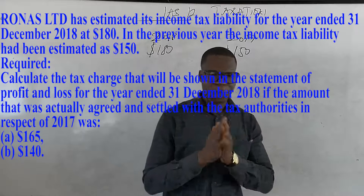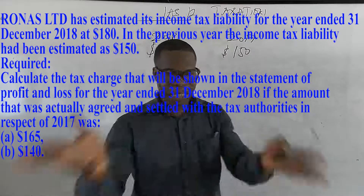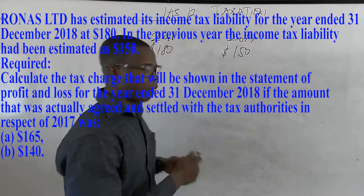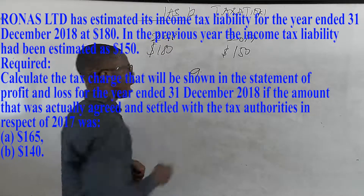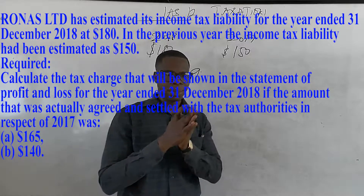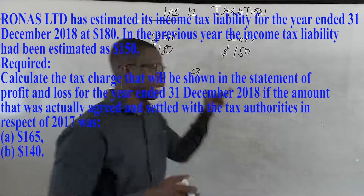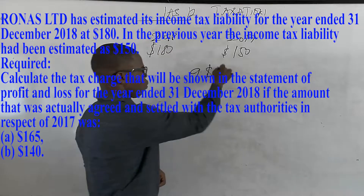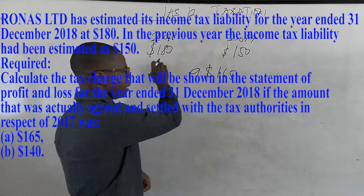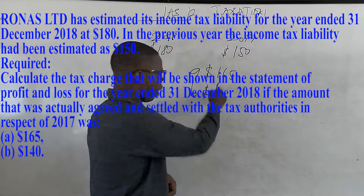If the 2017 tax was actually agreed and settled with the tax authority, we are paying two amounts — looking at the under provision and then the over provision. Scenario A: if they paid $165 in 2018, and Scenario B: if they paid $140.